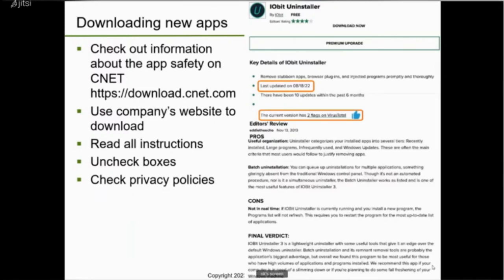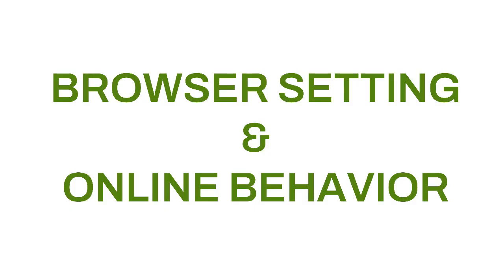When installing a new app, make sure you read all the instructions. You want to uncheck any boxes to avoid installing another app bundled with it. I remember once I was installing something quickly, didn't uncheck the box, and ended up downloading bundled software — it was a real hassle to uninstall everything. So go through the steps slowly and carefully, uncheck any boxes, and check the privacy policies so you're actively deciding whether you want to install that software.